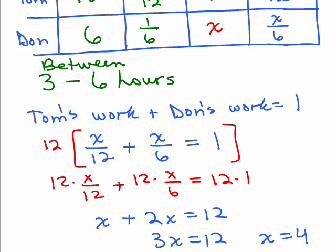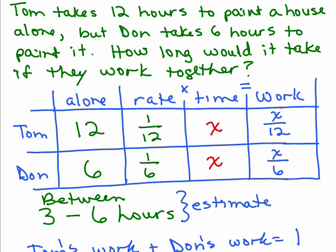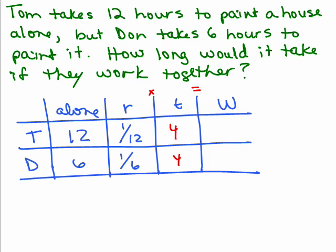Now, does that make sense? This was our estimate that it was going to be in between 3 and 6 hours, so yes, 4 hours makes sense. All right, let's look at the original problem again. It says how long would it take if they worked together? So we're looking for how much time, we got x was equal to 4, and x stood for the amount of time each of them worked.